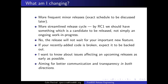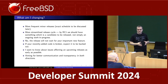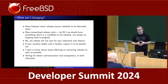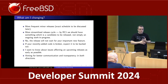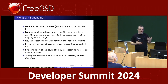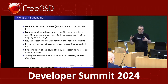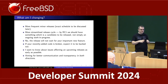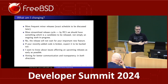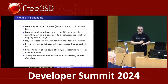What am I changing compared to the way things have been done for the past decade under Glenn and previous release engineers? I want to do more frequent minor releases. We have talked a lot at developer summits about how often you should do minor releases, and reality has ended up being somewhat slower than what we aimed for. I've heard people say every six months, and then it's ended up being every nine months or every year. I want to have a schedule and be doing them frequently.